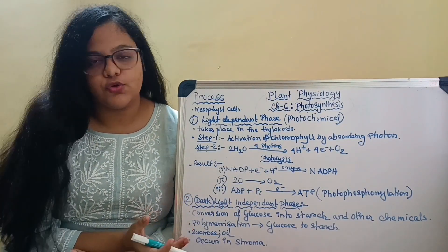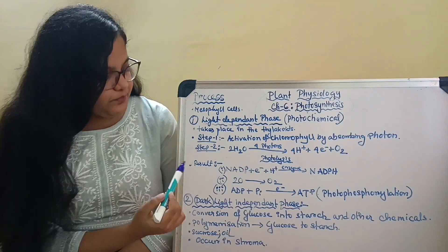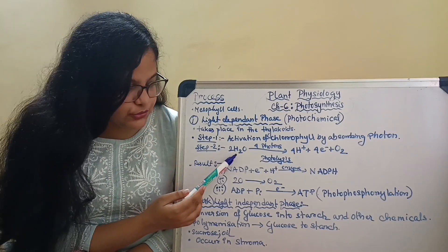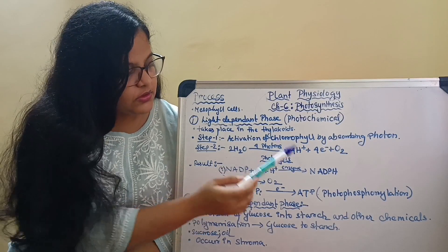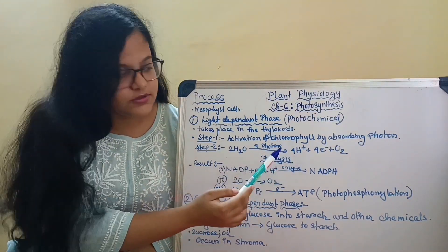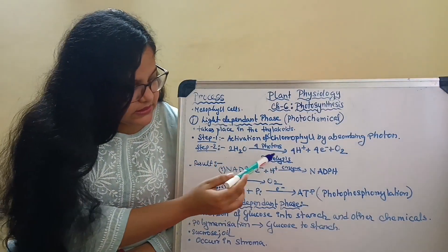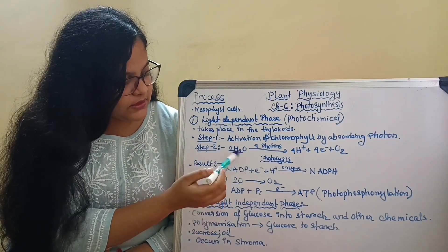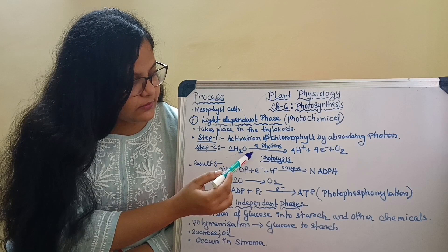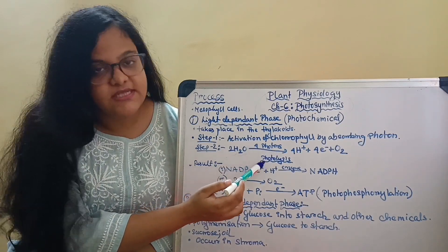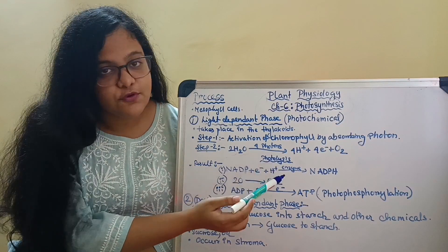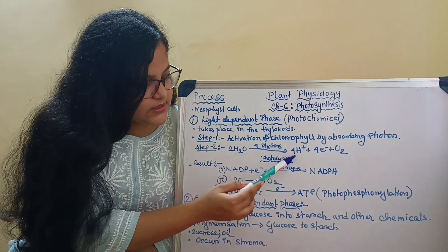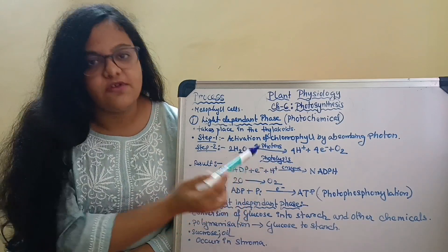Now what is a photon? In physics you have learned that a photon is the smallest unit of light. In the next step, water — 2H2O — is split into H+ ions and electrons in the presence of the four photons previously taken up by the chlorophyll. This splitting of water by light or photons is also known as photolysis.